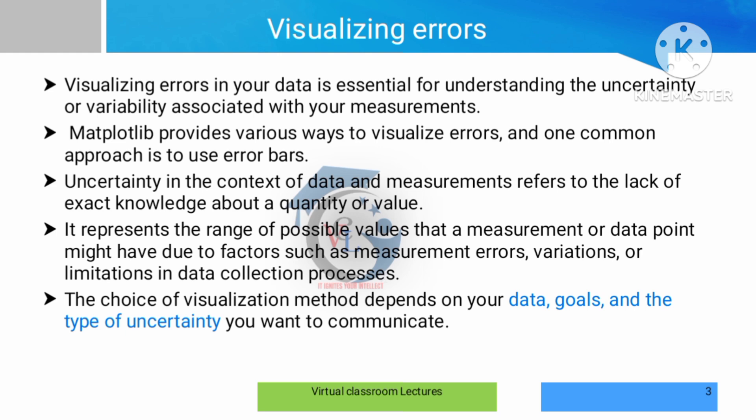Visualizing error is a graphical representation of data analysis. We can visualize datasets — it is a visualizing error. We can show the error, which is a graphical representation of the data, by using Matplotlib. There is a concept called error bar that we can use to show the error. The topic here is uncertainty — uncertainty is data measurements.